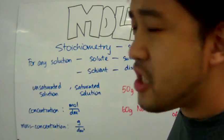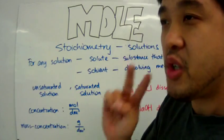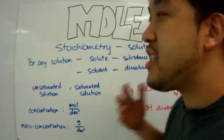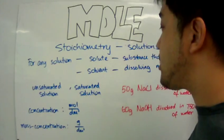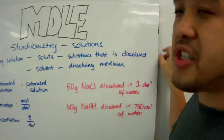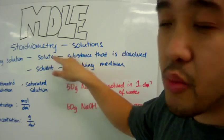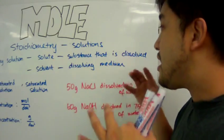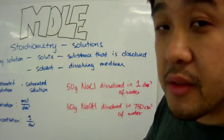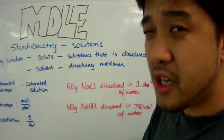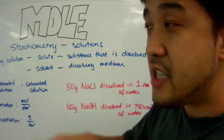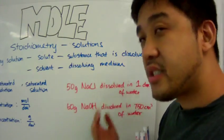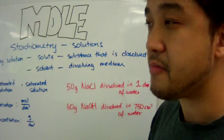For any solution you must have two components. The first is the solute, which is the substance that is dissolved. The second component of the solution is the solvent, which is the dissolving medium.